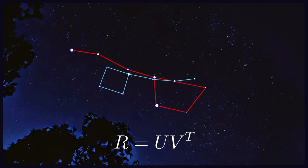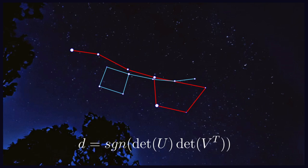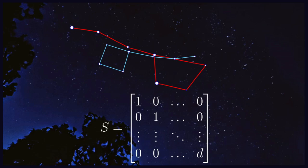To detect and correct the reflection, we calculate the determinant of the two singular values matrices. If they have the same sign, then there is no reflection, and if they have a different sign, then there is a reflection between the two point patterns. After computing this sign value, we construct the matrix S, which contains ones on the main diagonal, except the last value, which is replaced by D, the sign value we have just computed, and zeros in the rest.